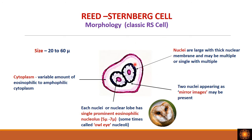The classical Reed-Sternberg cell has a size of about 20 to 60 microns. It has a bi-lobed nucleus with two lobes that appear as mirror images of each other. In the nucleus there are prominent eosinophilic nucleoli, resembling owl-eye nucleoli. The nuclear membrane is thicker, and the cytoplasm is moderate to abundant and eosinophilic to amphiphilic.